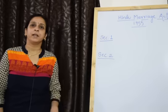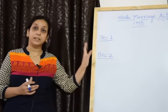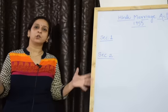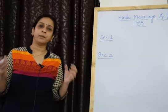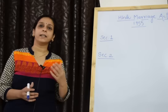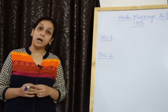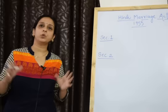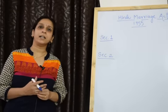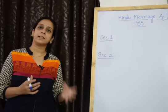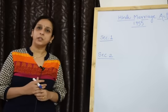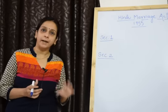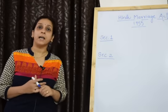This act first establishes that it is applicable to Hindus. The second question is: who is a Hindu? Third, if two Hindus want to marry, what are the essential conditions? Then, if any provision of the Hindu Marriage Act has been violated, what matrimonial reliefs are available to the parties? These include restitution of conjugal rights under Section 9, judicial separation under Section 10, and divorce under Section 13. This also covers valid marriage, void marriage, and voidable marriage, where both parties are Hindu.